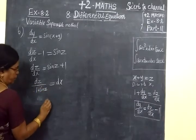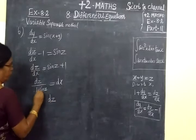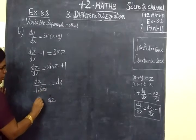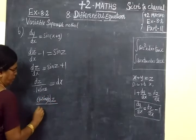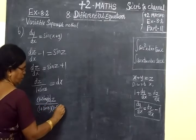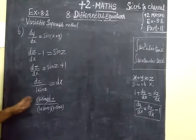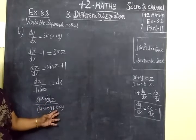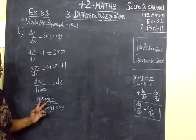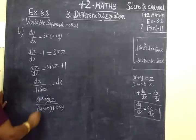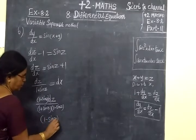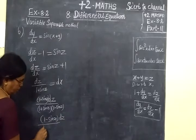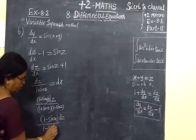Now multiply and divide by the conjugate 1 minus sin z. So we have 1 minus sin z by bracket 1 plus sin z into 1 minus sin z. Multiply and divide by 1 minus sin z.